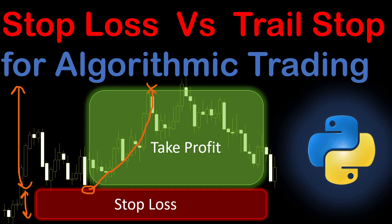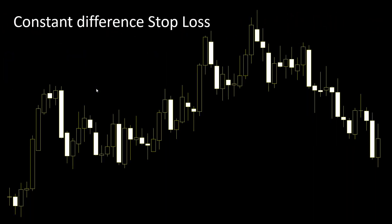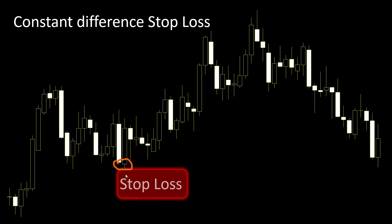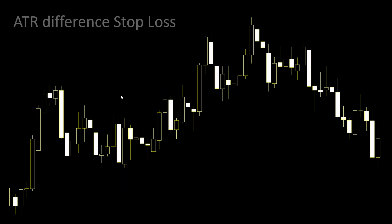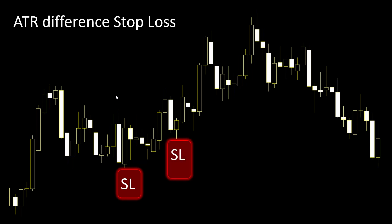For the stop-loss values, we are going to consider four different cases. The first one is a constant stop-loss distance fixed by the trader throughout all trades — meaning if this is my buy position, I fix a stop-loss distance, and no matter where the buying position is, I always consider the same distance between the position and the stop-loss value. The second method is more dynamic: it relies on the Average True Range (ATR), so the stop-loss distance will be dependent on the volatility of the market at that particular position, giving a different stop-loss distance for each trade.